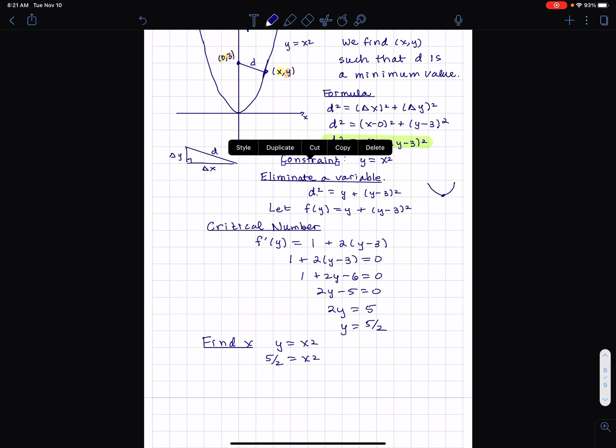Actually as you can see, there should be two points that will satisfy this criterion. So it's going to be plus or minus the square root of 5/2. So that's going to be plus or minus square root of 5 times square root of 2 over 2. So x equals plus or minus square root of 10 over 2.